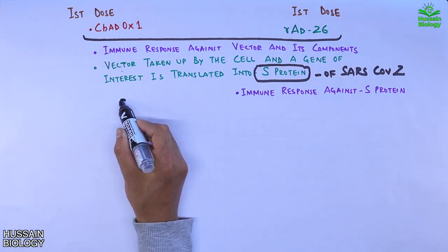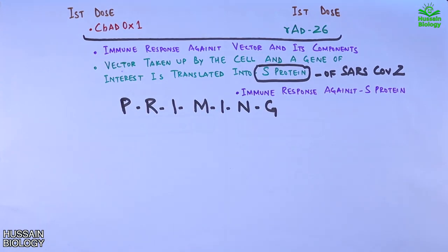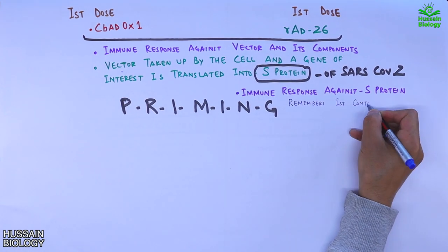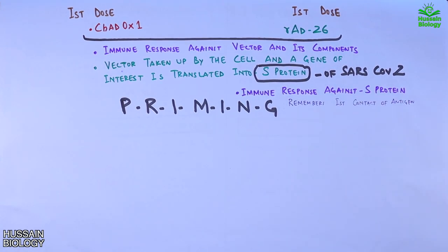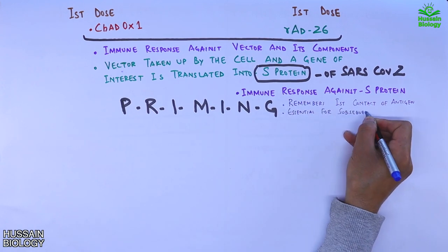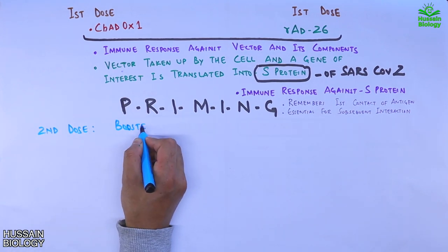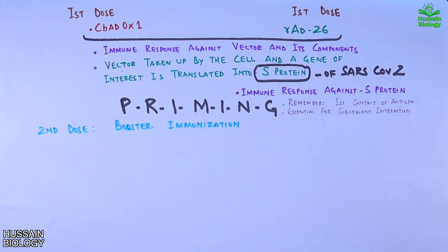Moreover, during these events the priming of the immune system is launched, where our immune system remembers the first contact of the antigen and its interaction within our body. Priming is essential for subsequent interactions. Now we proceed to the second dose, that's booster immunization.